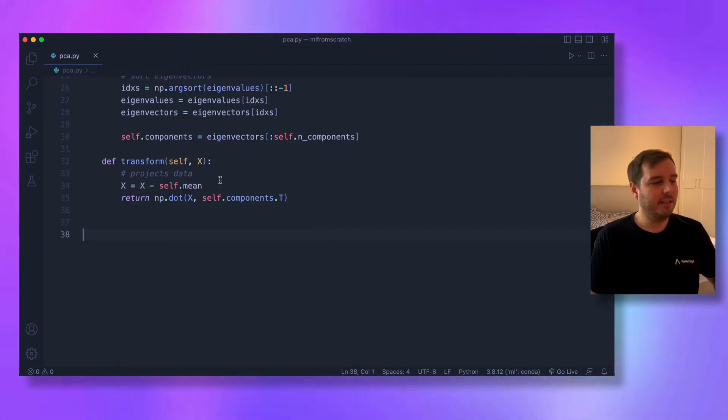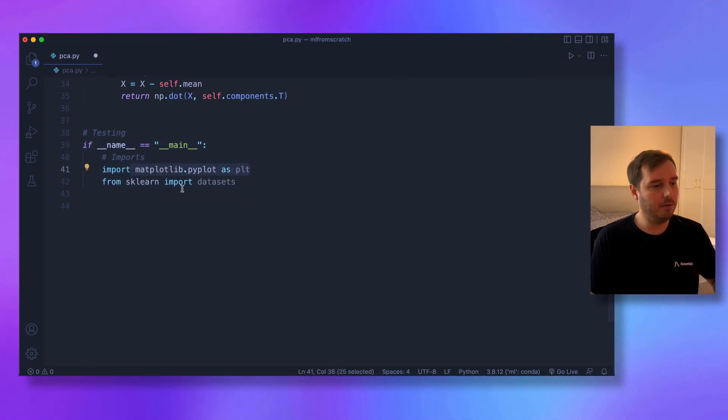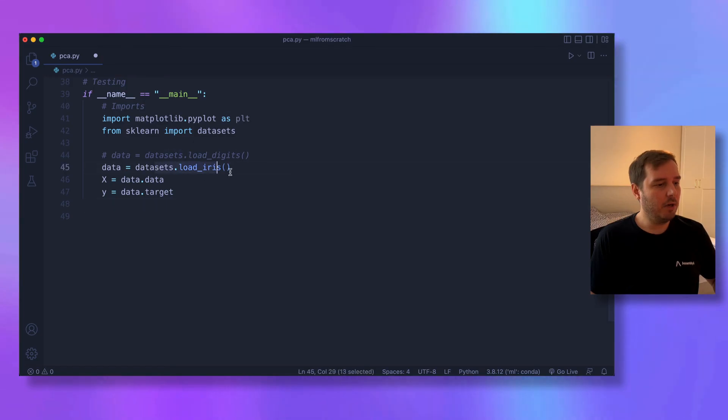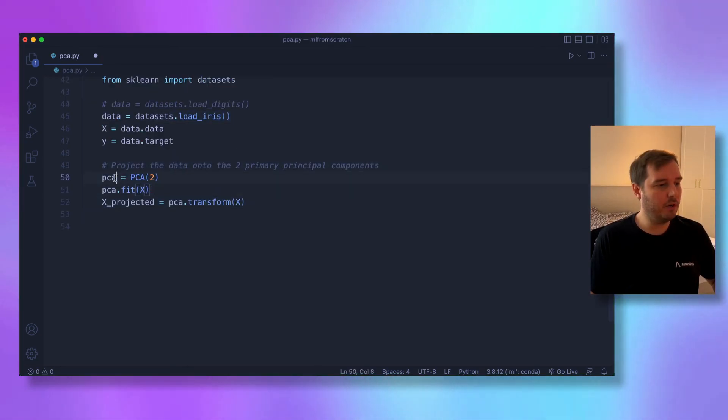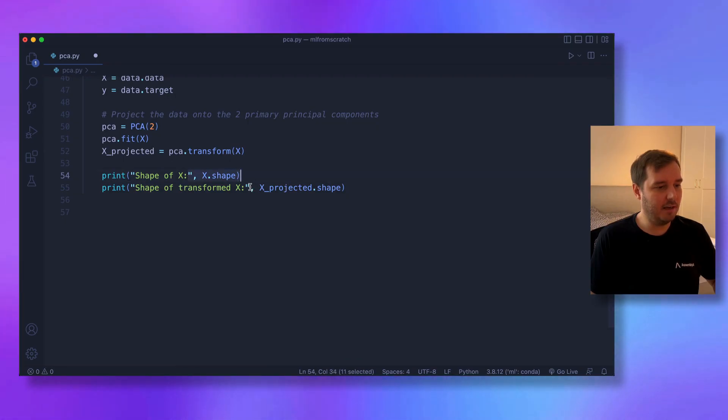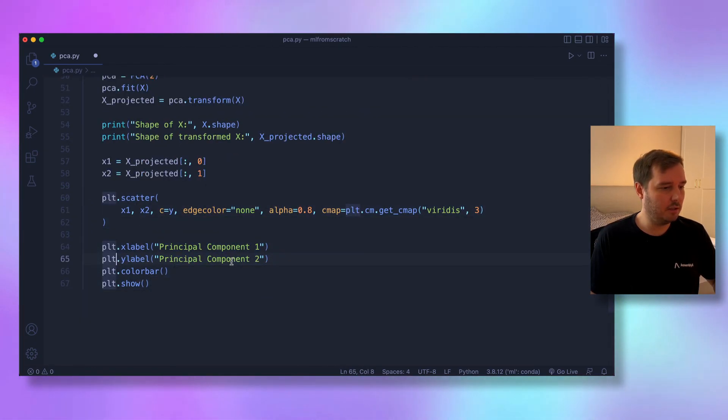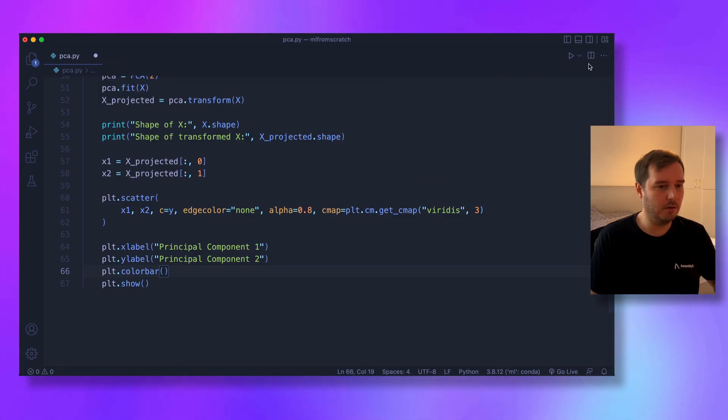Now we can test this. For testing, I already prepared the code—you can find it on GitHub. Let's go over this briefly: we import matplotlib and datasets from sklearn. We load the iris dataset in this example, then create our PCA instance, keeping only two dimensions. We call pca.fit and pca.transform. This is our projected data. If we print the shape of X and X_projected, you'll see the difference. Then we extract the first two dimensions of the projected data and plot this. The first axis is principal component one, and the second is principal component two.